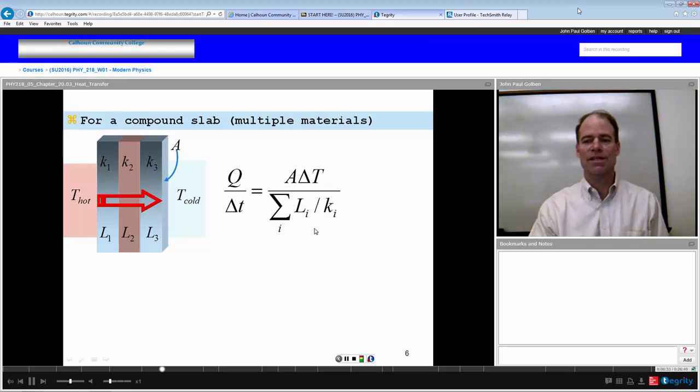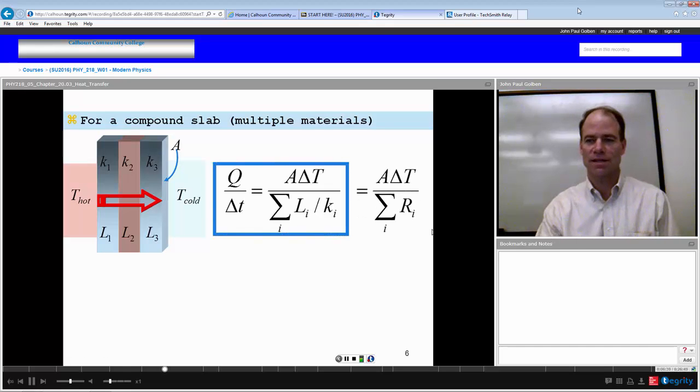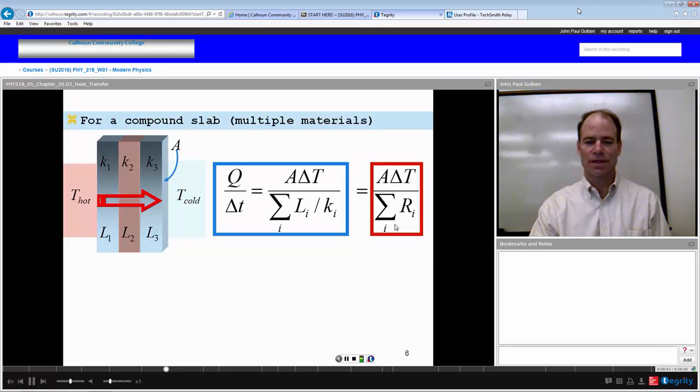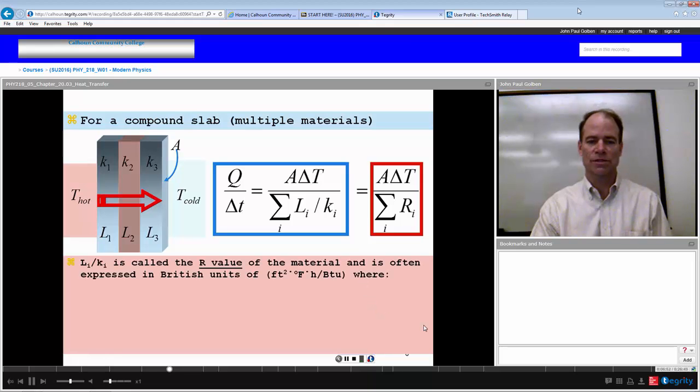Well, we have a definition for a length or thickness of a material divided by its thermal conductivity. That definition is called its R value. So we would sum up all the R values in the denominator of this equation and the numerator, we have the area times change in temperature. The thickness divided by the thermal conductivity is the R value of the material.